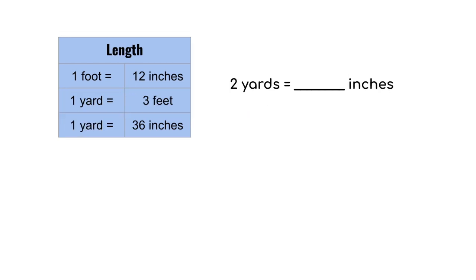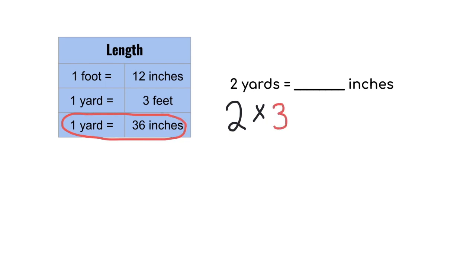Our last length conversion is two yards equals how many inches. So we're starting with two. We're multiplying, because we're going from a larger unit to a smaller unit. We find the conversion that has yards and inches together, which is 36. So two times 36 gives us a final answer of 72. Two yards equals 72 inches.